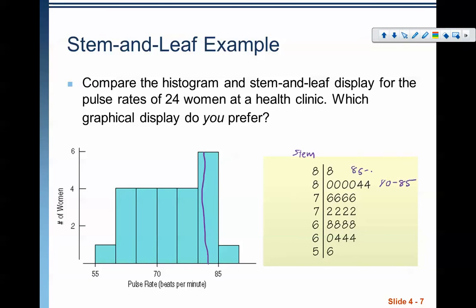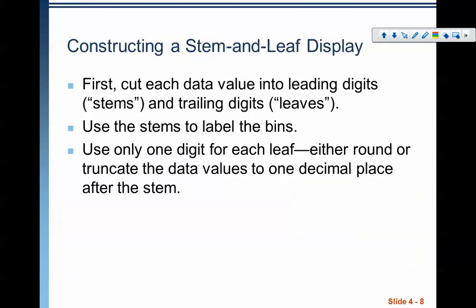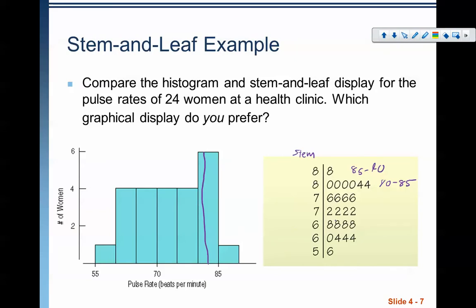The stem and leaf displays just contain the information in the histogram. And then we use only one digit for each leaf. Either round or truncate the data values to one decimal place after the stem.